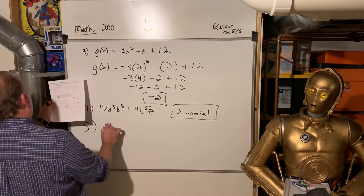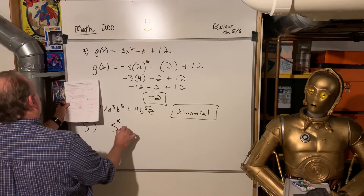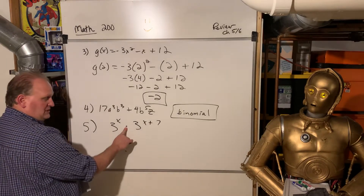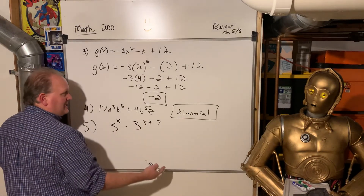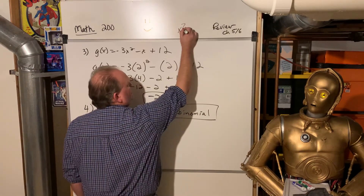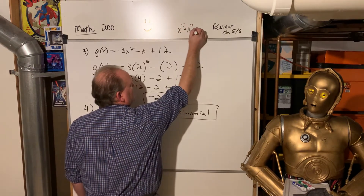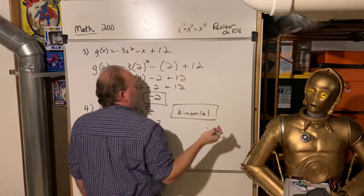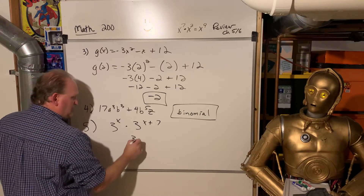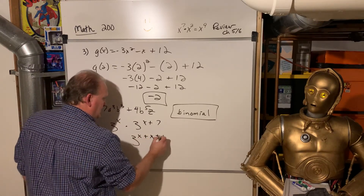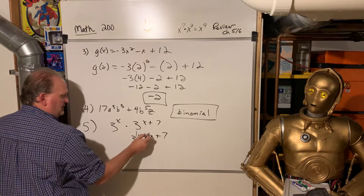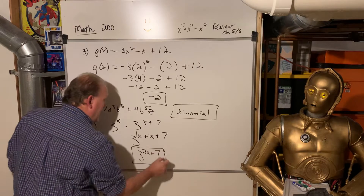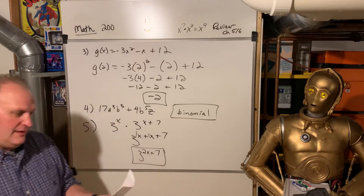Number 5: simplify 3 to the x power times 3 to the x plus 7 power. When you have like bases being multiplied, you add the exponents — just like x to the 7th times x to the 2nd is x to the 9th. Here it's a little more abstract with variables, but at the end of the day it's 1x plus 1x, giving us 3 to the power 2x plus 7.